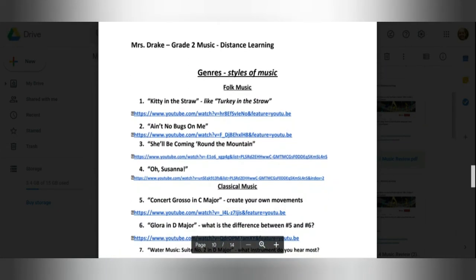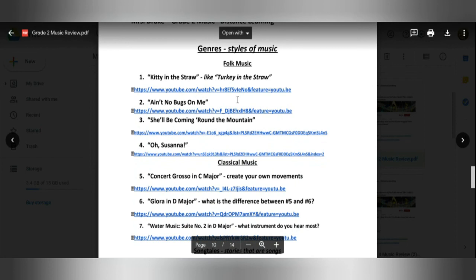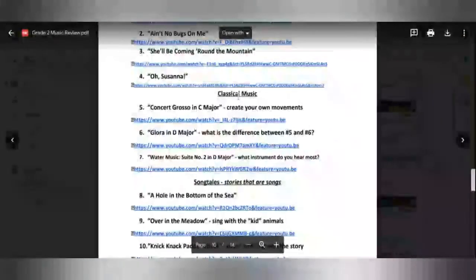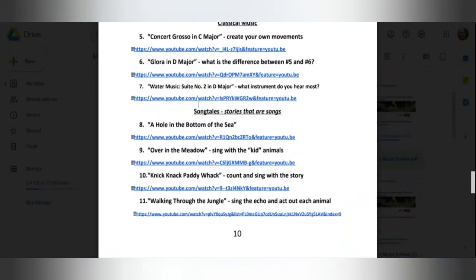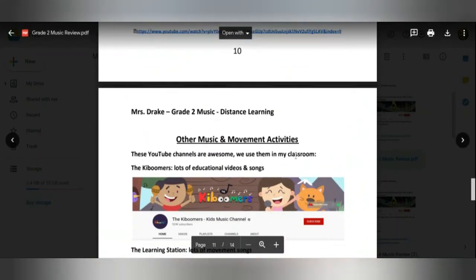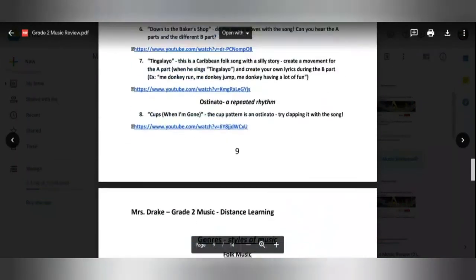And then finally, we looked at genres of music or the different styles. So folk music, for example, we've learned a lot. Remember, folk music tells a story. We've looked at a lot of classical music this year. We looked at The Nutcracker, Vivaldi's Four Seasons, In the Hall of the Mountain King by Grieg. That was our Halloween song. So we've done a lot of that as well. And then in our distance learning, we've learned what a song tale was. Stories that are songs.